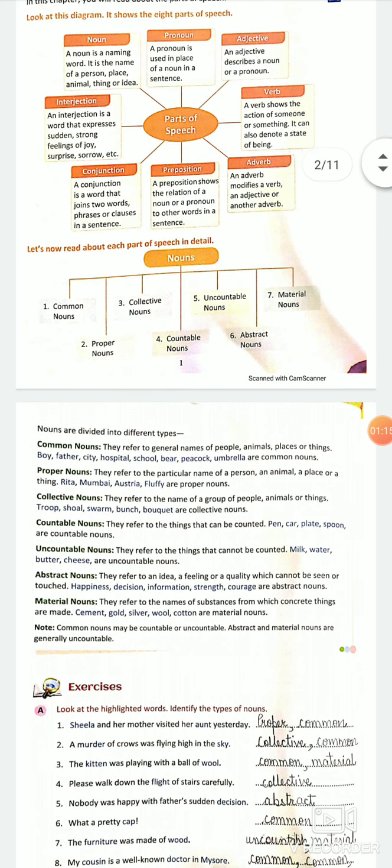Let's check the types of nouns. We have common nouns. They refer to the general names. Common noun is the general name of anything. It can be a boy, I say boy, I say city, any city.